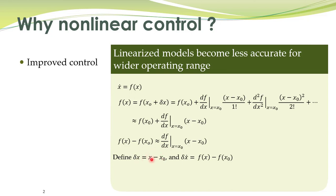If you define (x minus x-naught) to be equal to delta-x, and delta-x-dot equals f(x) minus f(x-naught), then delta-x-dot is approximately equal to this relation. What is the dimension of f? The same dimension as the state vector. Generally we denote the dimension of states by n, so this is an n-by-1 vector. The derivative of a vector function with respect to a vector gives a matrix, so this expression is very similar to the one for linear systems: x-dot equals some constant matrix A multiplied by x. This is how you linearize non-linear systems and then utilize linear control theory for controller design.